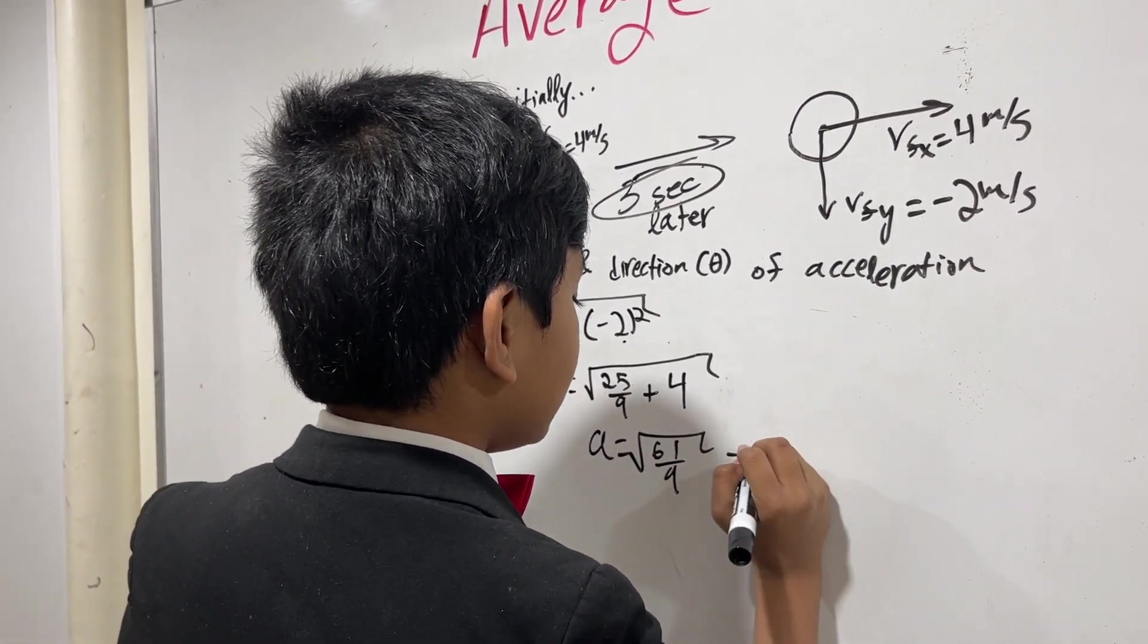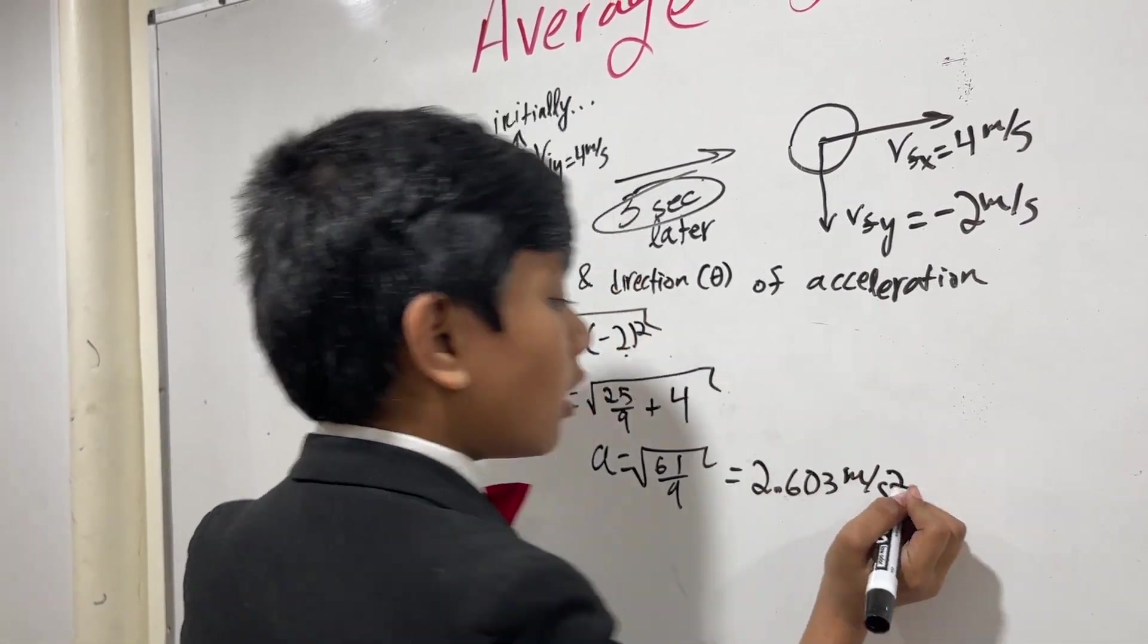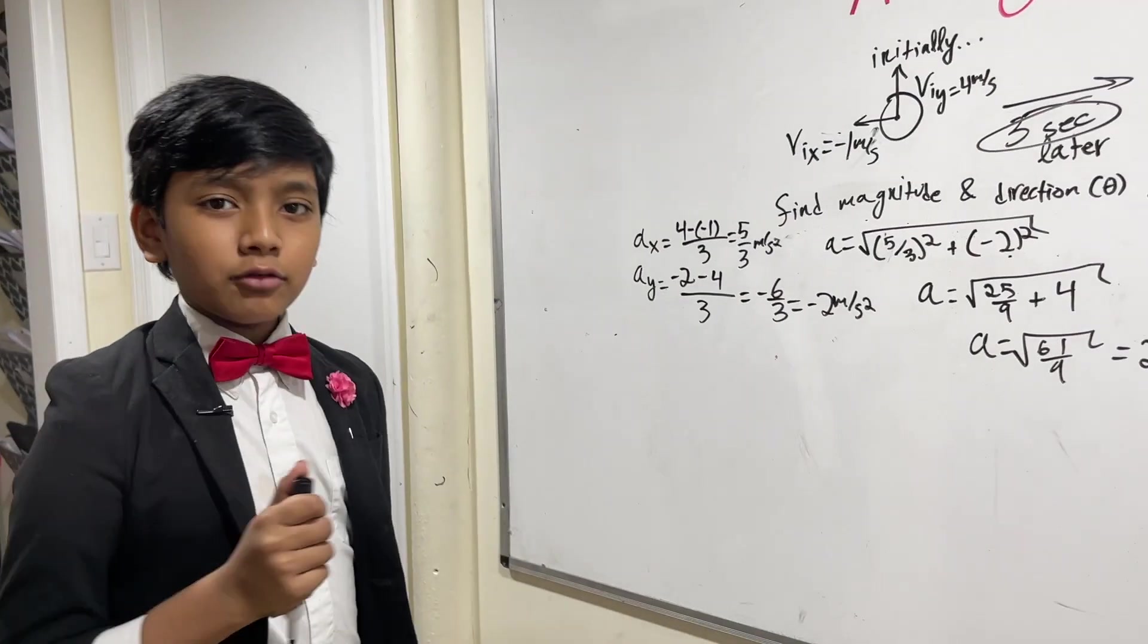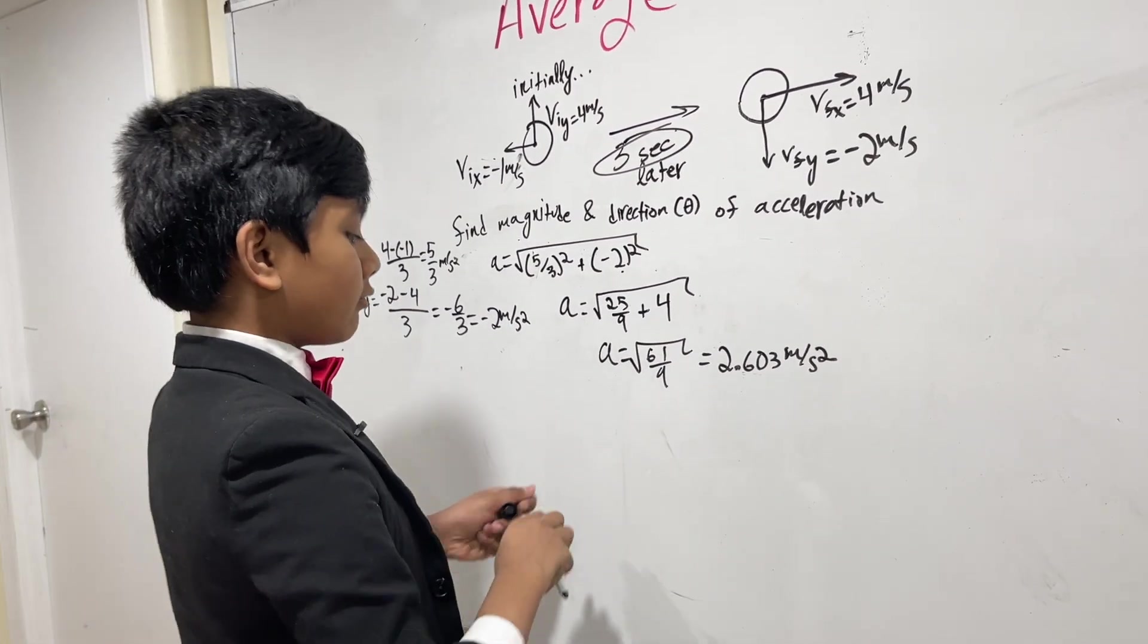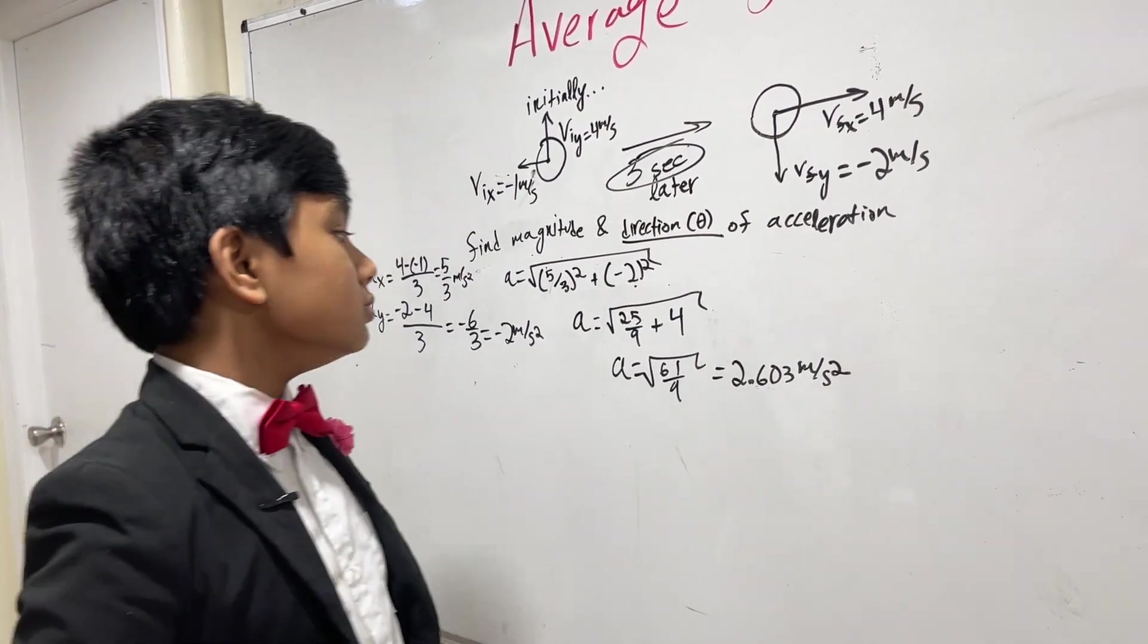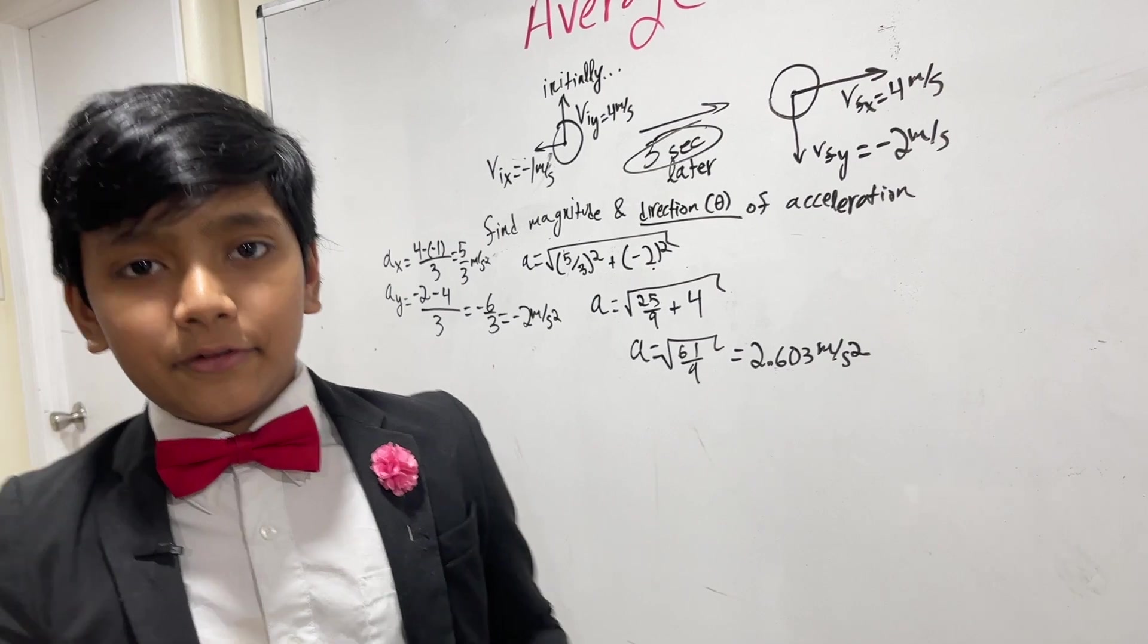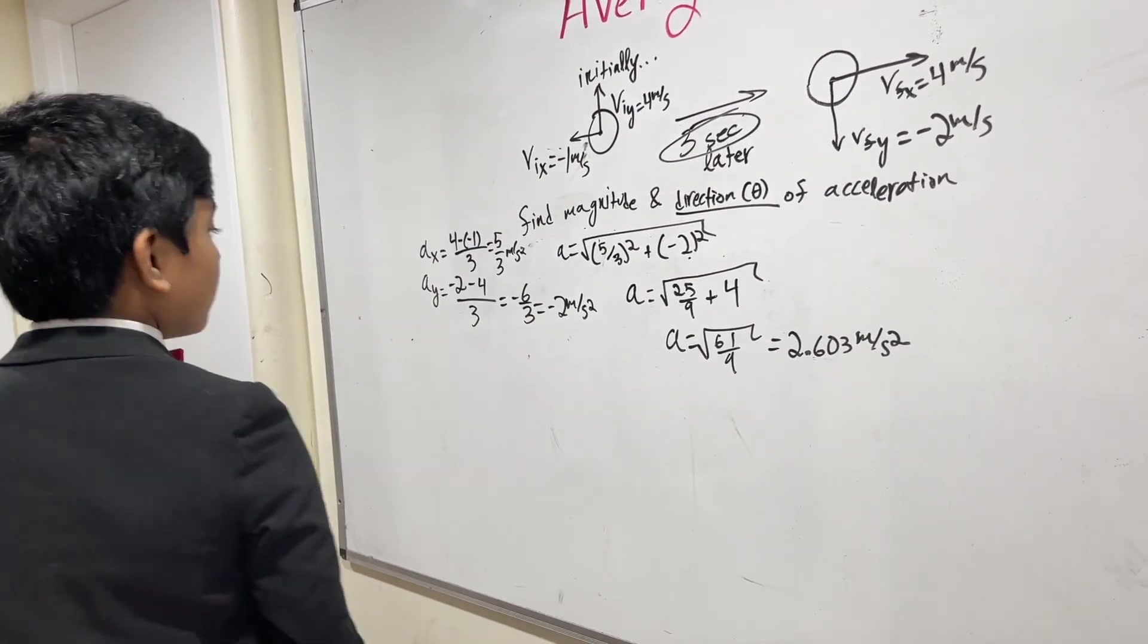So, now we get A is the square root of 61 over 9. And this is equal to about 2.6. Alright. So, now, what are we to do? Well, we also have to find the direction of the acceleration as well. So, how do we do that? Let's visualize. I can't visualize.